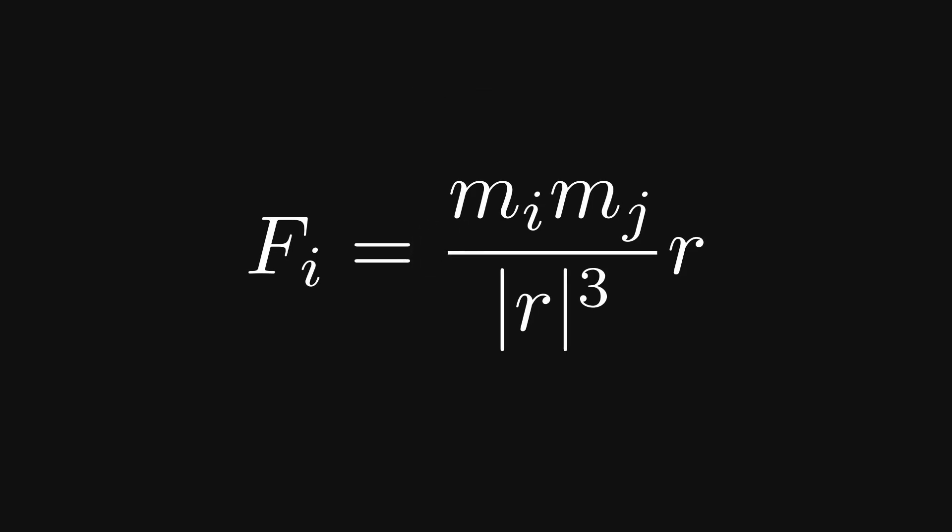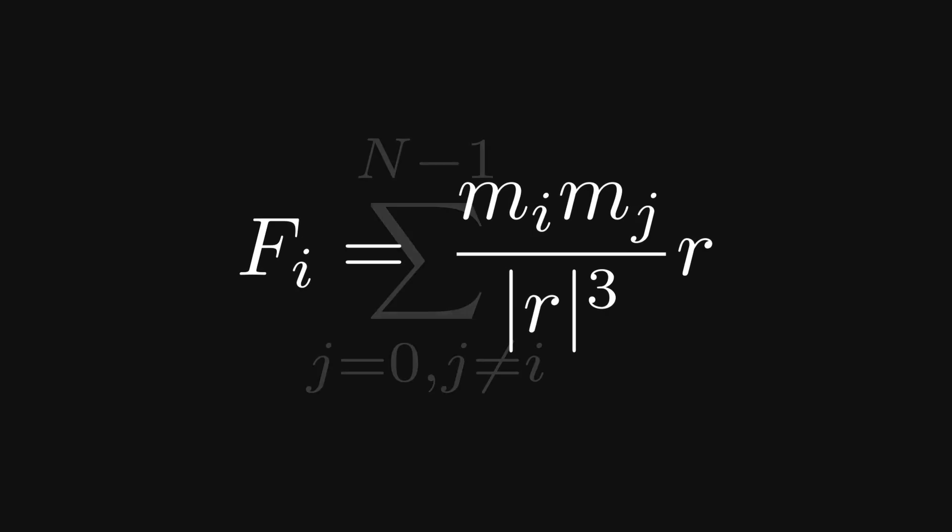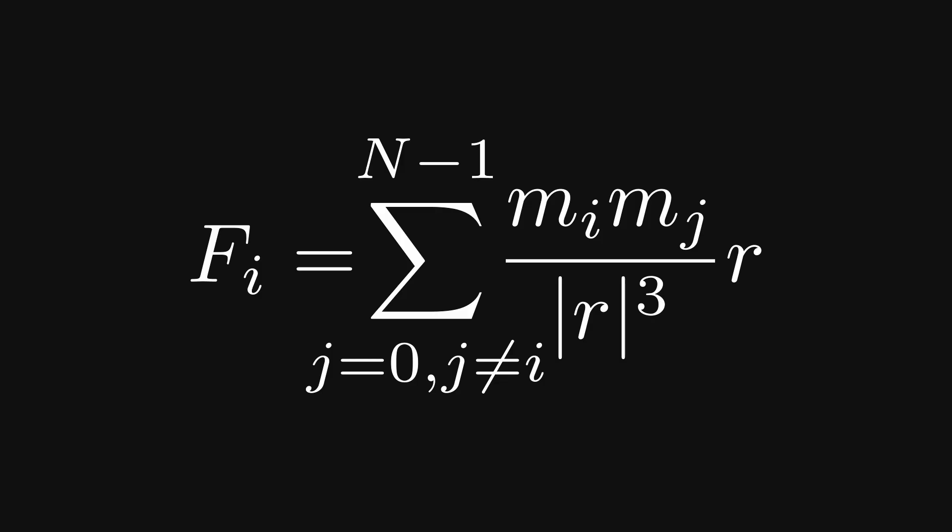To calculate the resulting force, we must sum these individual forces towards all other bodies. In other words, we allow the index j to range over the entire body's vector, making sure that j does not equal i, because we do not want a body to accelerate towards itself.